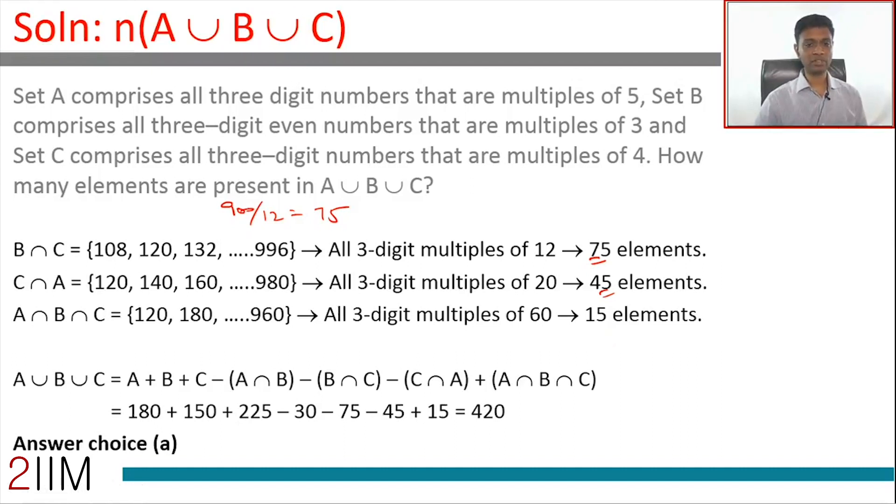Effectively multiples of 60—the LCM of 6, 4, and 5. That is 900 by 60, which is 15 numbers. So the final answer we're looking for: 180 plus 150 plus 225 minus 30 minus 75 minus 45 plus 15. We can knock off 150, so 180 plus 240 is 420.